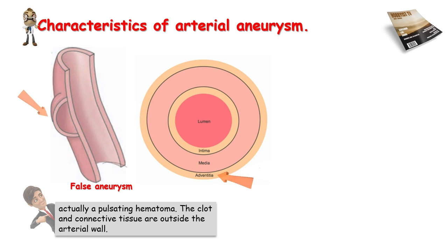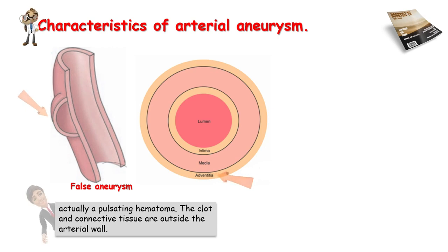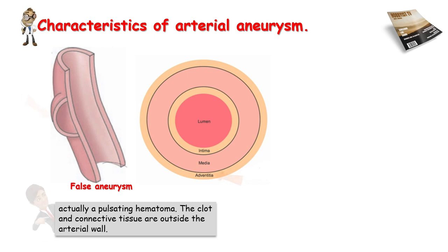Pseudo aneurysms typically occur when there is a breach in the vessel wall, such that blood leaks through the inner wall but is contained by the adventitia or surrounding perivascular soft tissue. The most common cause of this false aneurysm is trauma, such as dissection, laceration, or puncture. Arterial catheterization accounts for most pseudo aneurysms, along with biopsy and surgery.